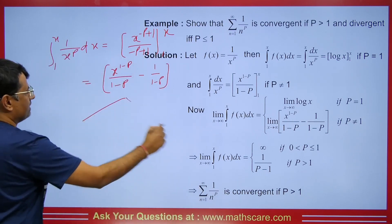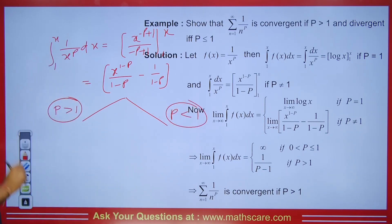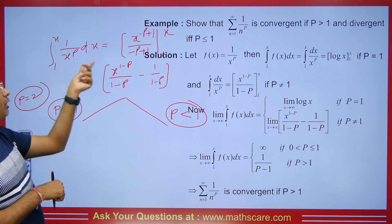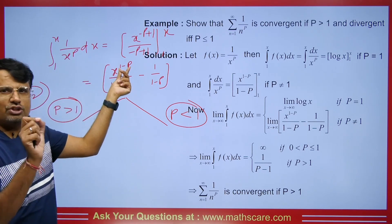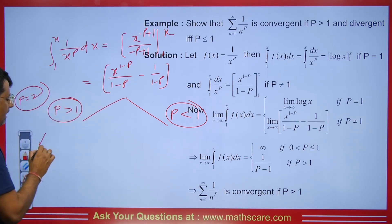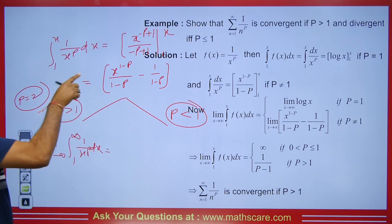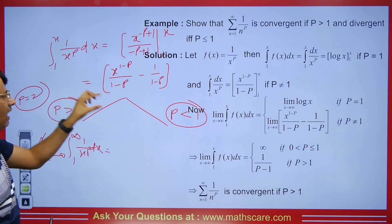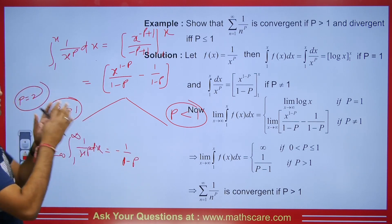For the first case, let's put p=2. Then the exponent becomes 1 minus 2, which is minus 1, so we get 1/x, which means this value will be negative in the exponent. When you put the limit x tends to infinity, the term 1/x^(p-1) goes to 0, and we get a finite value of 1/(p-1). This means the value exists finitely, so the series is convergent when p greater than 1.